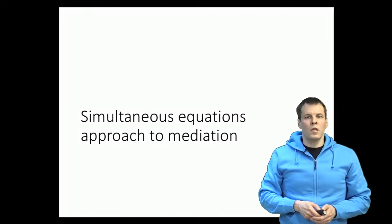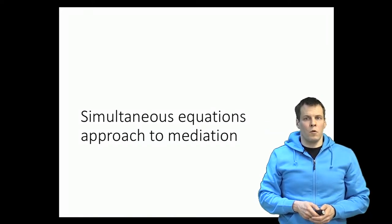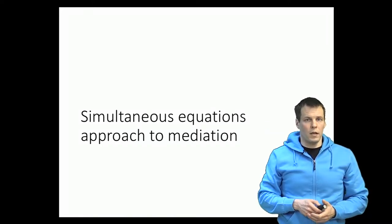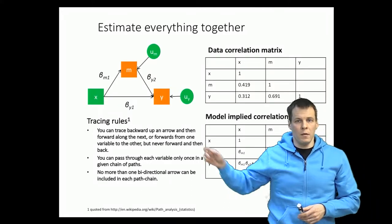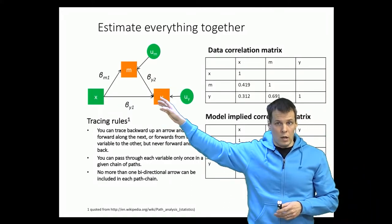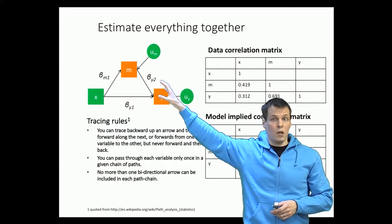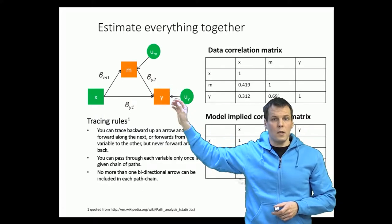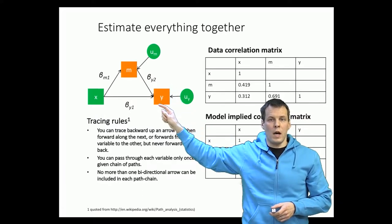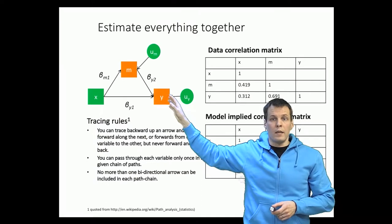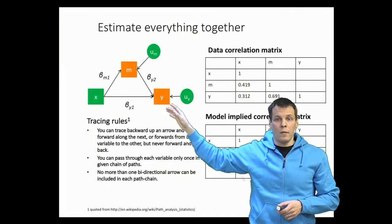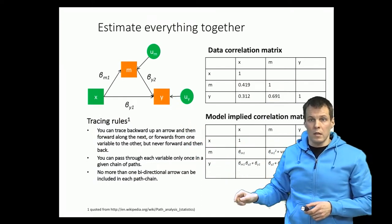The simultaneous equation approach is another way of calculating a mediation model. How this approach works is that we take the mediation model as one large model, and instead of estimating the regressions of y and m separately, we derive the model-implied covariance matrix.